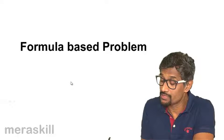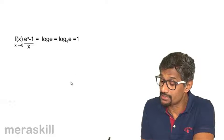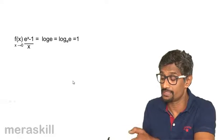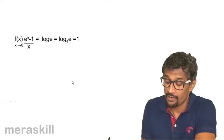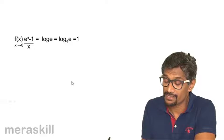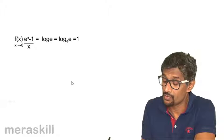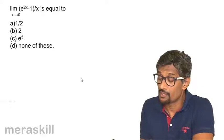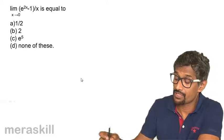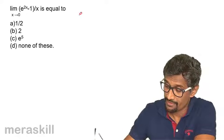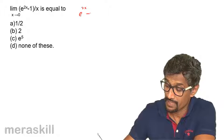Let's see how we can take up questions based on f(x) = (e^x - 1)/x as x tends to 0. For example, here we have e raised to 2x minus 1, divided by x, and we need to find the limit as x tends to 0.